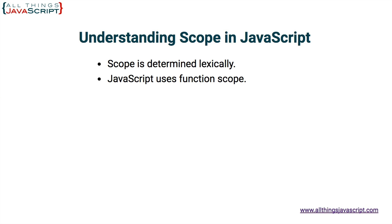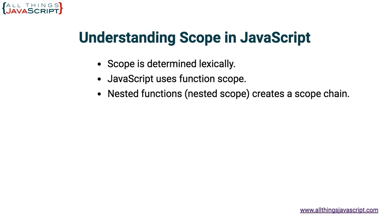Second, JavaScript uses function scope. When a new function is declared, that creates scope. Everything in JavaScript starts in the global scope, but as you begin creating functions, that creates scope as well. And then finally, nested functions — if you declare a function inside another function, that creates a nested function, which creates what we call a scope chain. These are the three concepts that are important to keep in mind as we go through these examples.